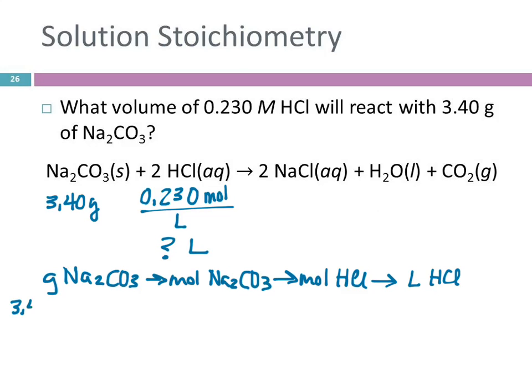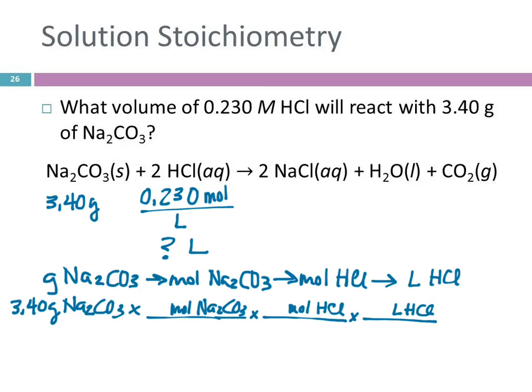So we're going to start with 3.40 grams of sodium carbonate, and we're going to multiply, and we're going to have moles of sodium carbonate on the top. And then next one is going to be moles of HCl, and the last one's going to be liters of HCl. Just following the path that I wrote down. Make a plan, follow the plan.